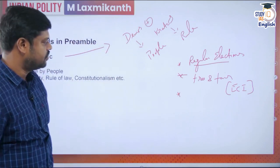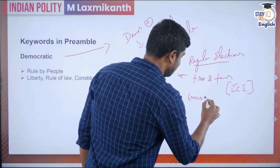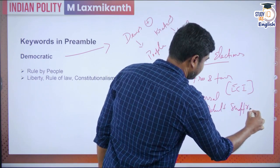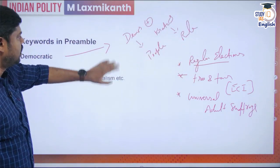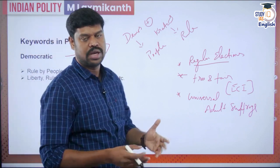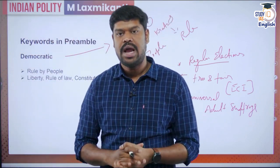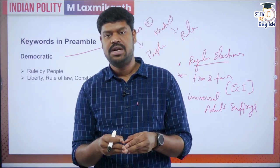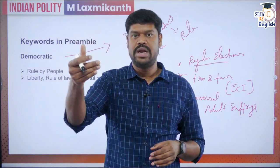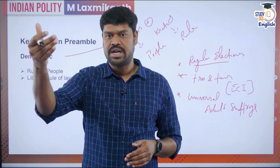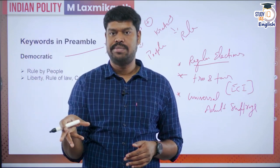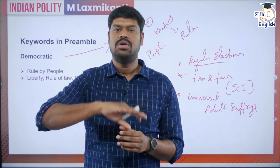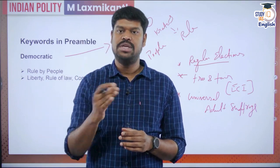Through regular elections, people's representatives come and from the elections governments are formed. These representatives carry out the administration on behalf of the people. The government is accountable to the people's representatives — the members of Parliament — and the members of Parliament are in turn accountable to the people. This is how the government functions wherever there is a democracy.